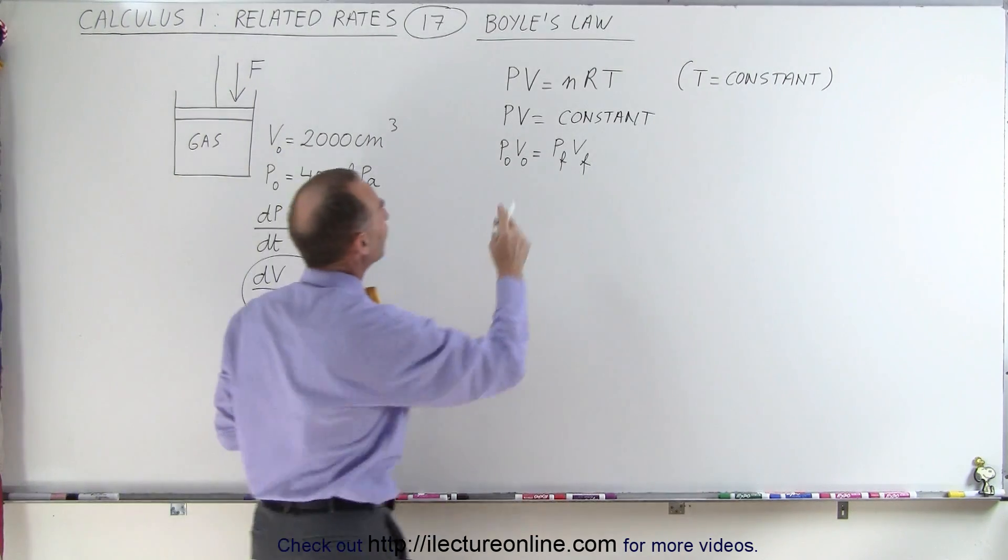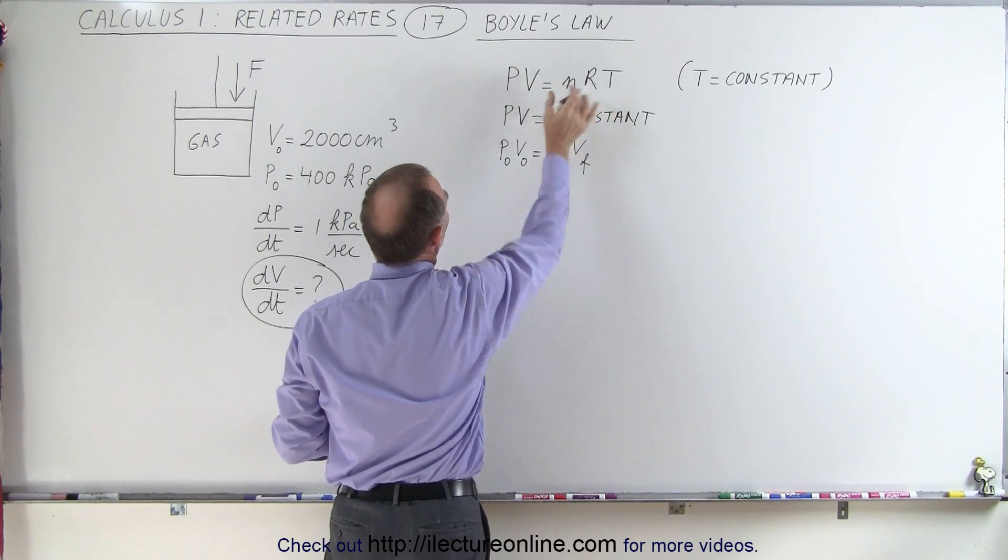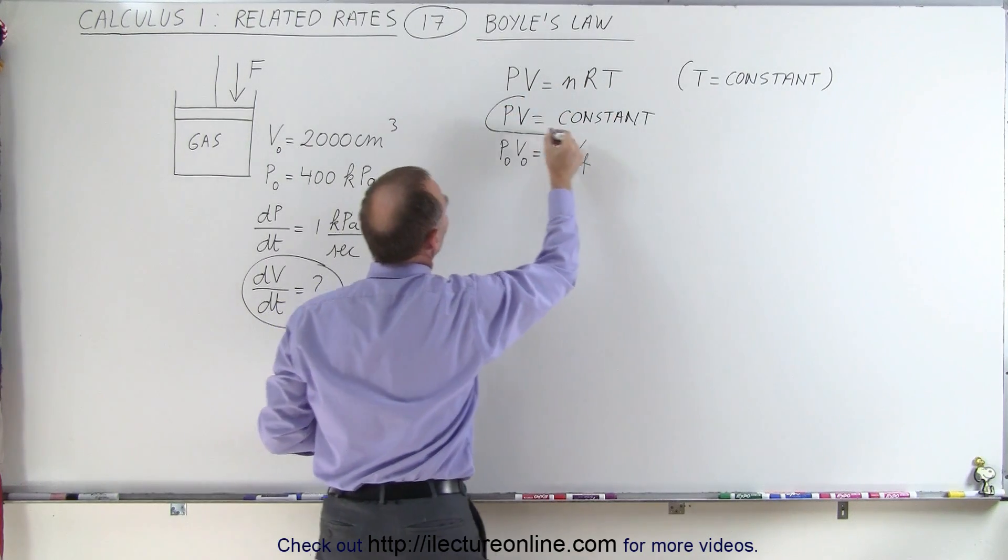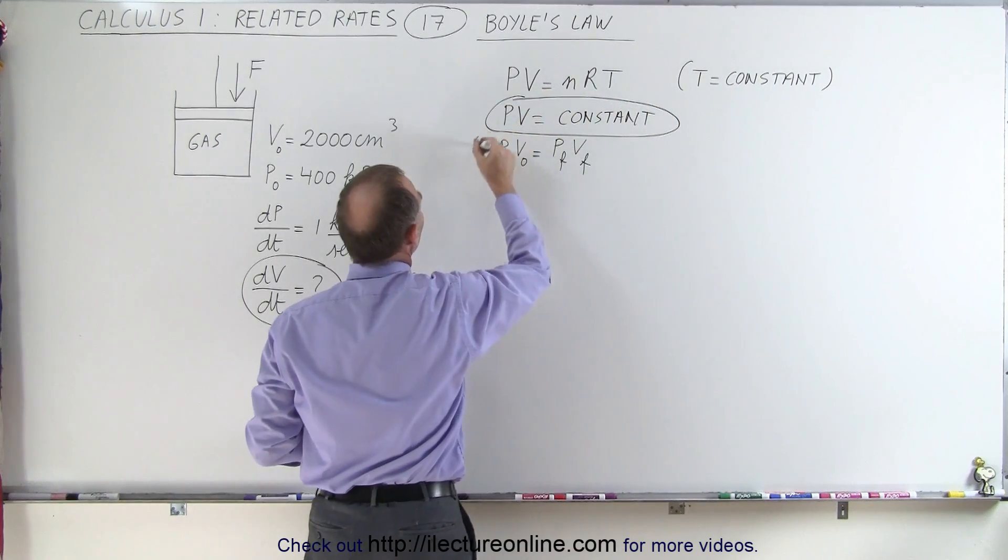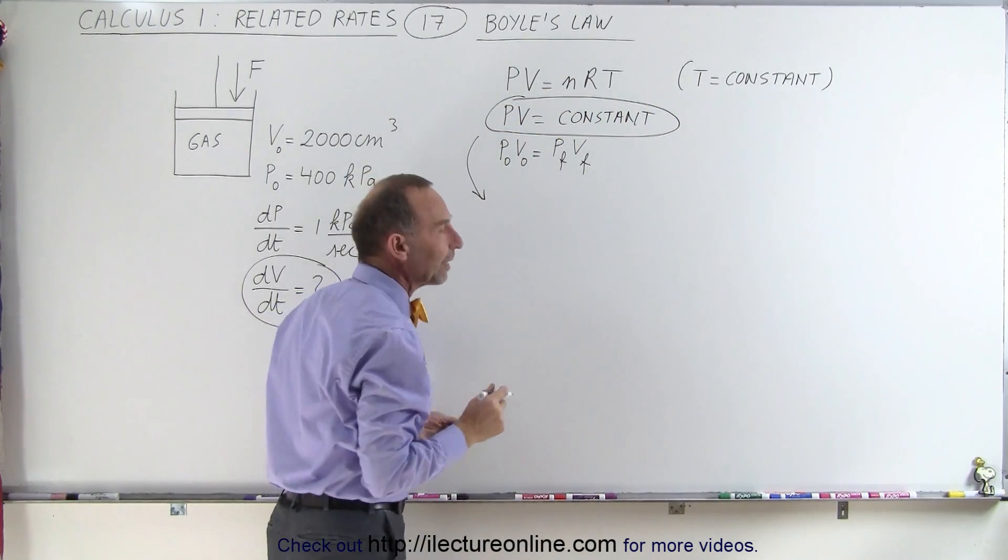Well, here we have PV equals nRT, and we know that's equal to a constant. So what we're going to do is we're going to take this equation, and we're going to take the derivative of that equation, both sides of that equation, with respect to time.